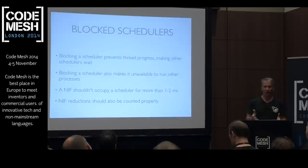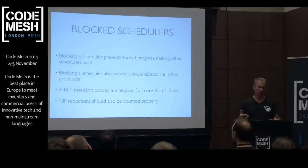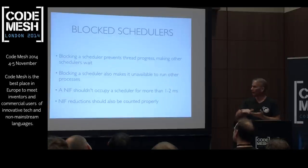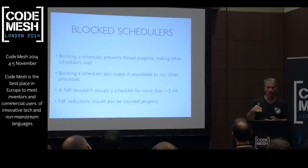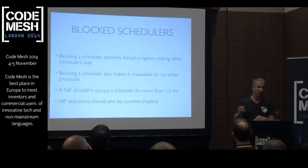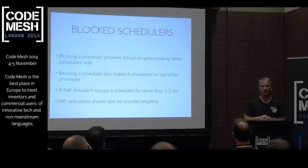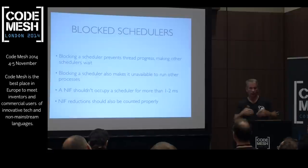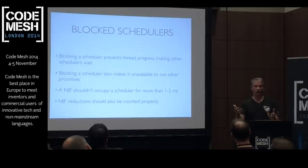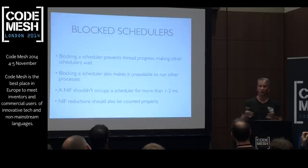If you block a scheduler, it can't report thread progress; it can't do anything. The other schedulers start to wait. When you block a scheduler it's not available to run other things. A NIF, if you read through the documentation, should never run for more than one to two milliseconds — there's another part of the docs that says you could run up to 10 milliseconds, but try to keep it to one or two max. NIFs act as one function call — one reduction to the emulator — but a NIF can be doing a whole bunch of stuff in those one to two milliseconds and really needs to count its own reductions and report that correctly.